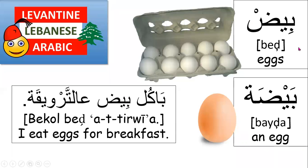Bayd means eggs in the plural, however bayda is one egg. Baykul bayd at terwi'a means I eat eggs for breakfast. I used bayd in general, meaning eggs. Asha means literally for breakfast. I can say ala at terwi'a because a is contracted from ala. I use the b prefix for the simple present because it's something I habitually or routinely do.